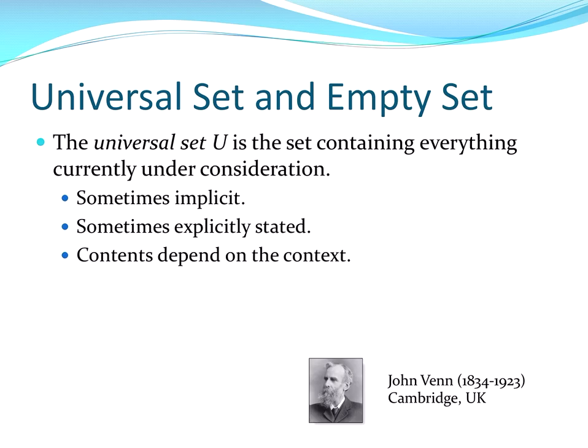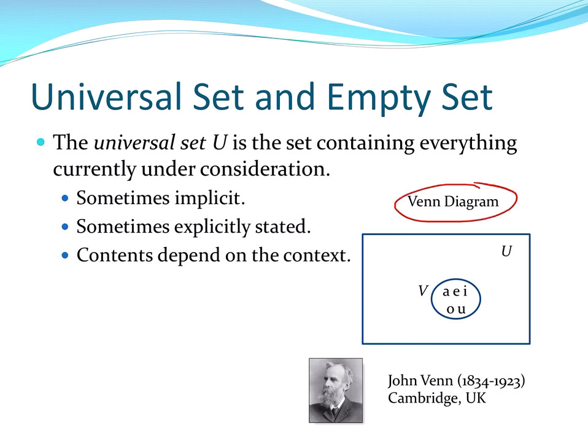All set elements come from a universal set. We talk about numbers. Often the universal set would be the reals or the integers. Talking about a group of people, then the universal set might be everybody in the world. We often represent the universal set with a Venn diagram.